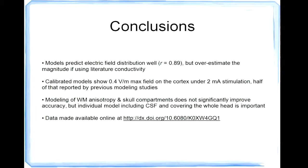And so these are some take home messages. So the good news is our model is doing a very good job in predicting the relative distribution of the electric field. But it always overestimates the actual magnitude of the field if you use literature connectivity. And the maximal electric field achieved inside the brain cannot be as high as one volt per meter as suggested by previous modeling study. It's just half of that. And it actually is not that important to model the white matter anisotropy or skull compartments. But it's very important to include the CSF and cover the entire head. So we made the data online. So in the future, people can just use it to test their new modeling techniques.